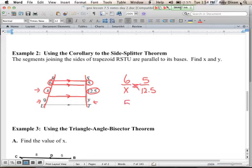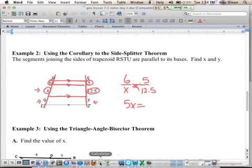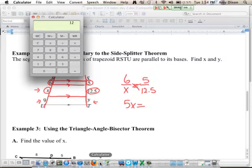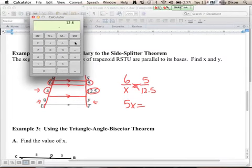Cross multiply, we get 5X equals, and then we got to do 12.5 times 6, let's do that on the calculator here, 12.5 times 6, so we get 75. Then we divide both sides by 5, so that gives us 15, so X is 15. So we have found X.